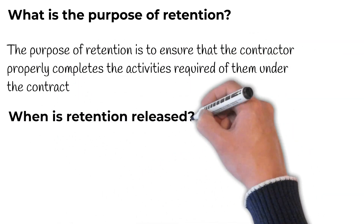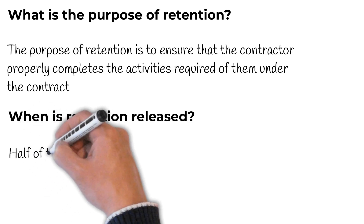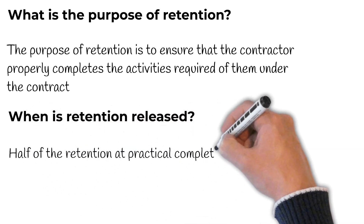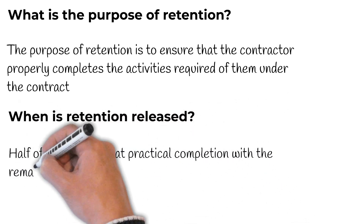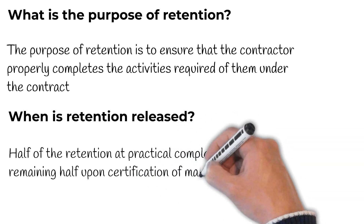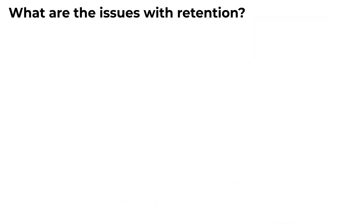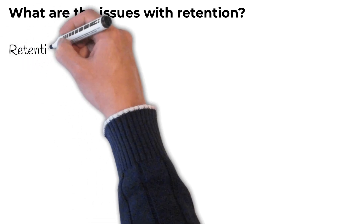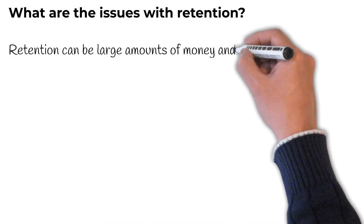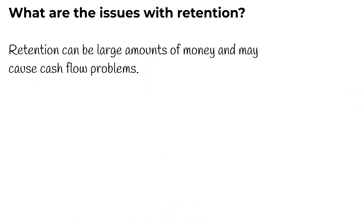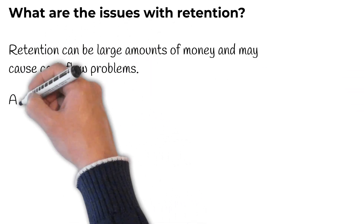When is retention released? Usually half of the retention amount is released at practical completion, with the remaining half released upon the certification of making good defects. As you can imagine, many businesses in the construction industry, especially subcontractors and other project participants at the lower end of the payment chain, are adversely affected by this practice. Retention can be large amounts of money and may cause cash flow problems for the parties throughout the supply chain.